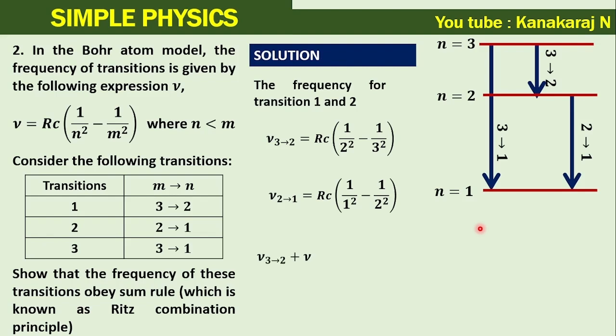Now let us add these two expressions. So on the left hand side, we get frequency for transition 3 to 2 plus frequency for transition 2 to 1 equals Rc times (1/2² - 1/3² + 1/1² - 1/2²) = Rc